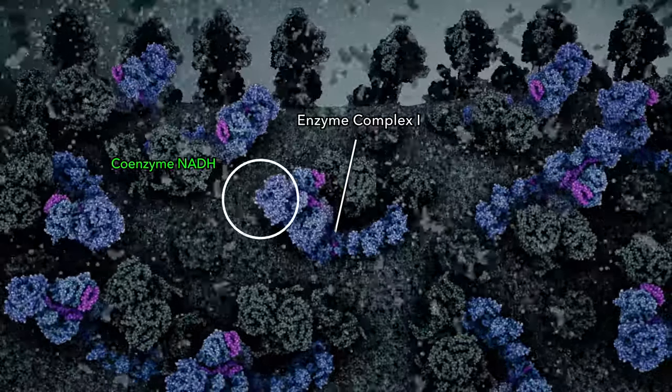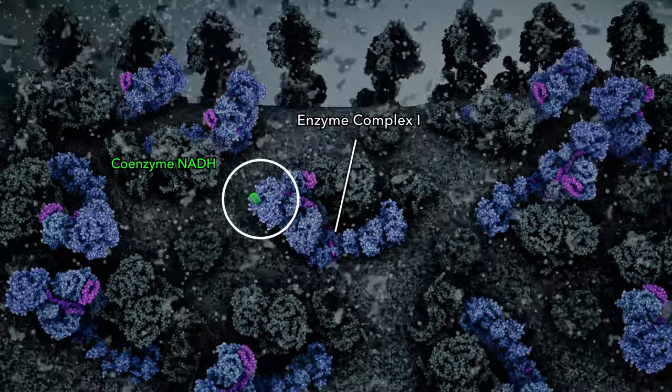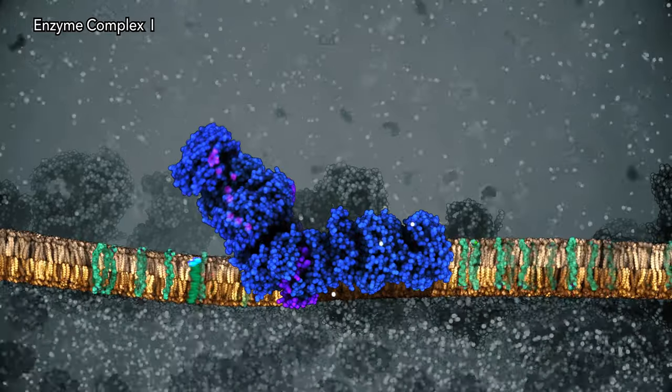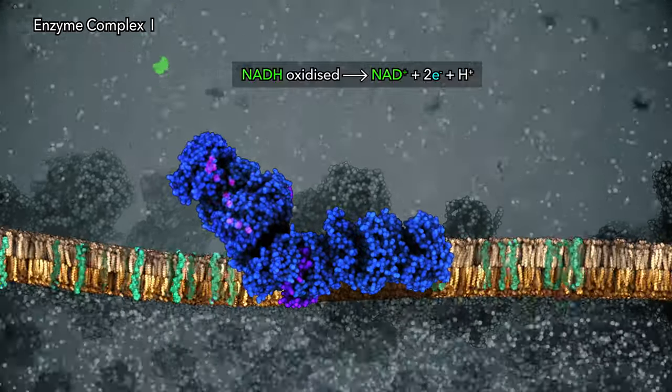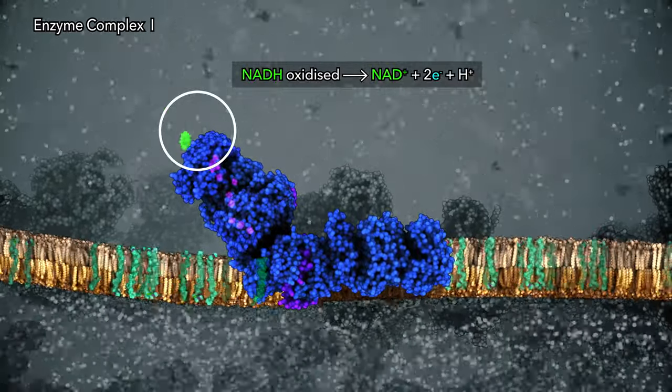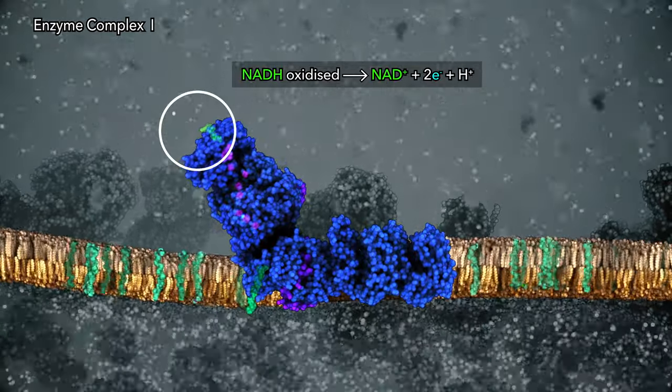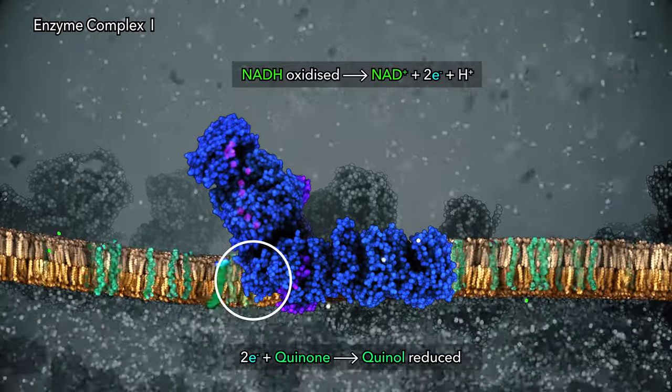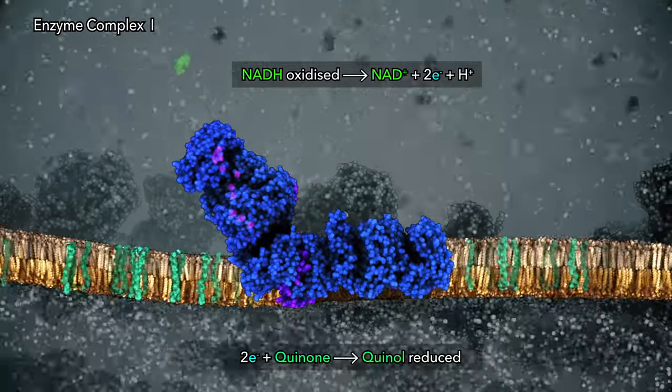The catalytic mechanism of enzyme complex 1 connects two different kinds of reaction. Coenzyme NADH is oxidized at one end of the enzyme, releasing two electrons that hop through the interior to coenzyme Q, which is reduced.